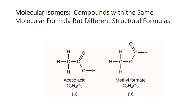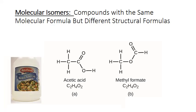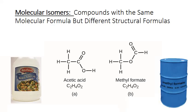It's a subtle difference, but it can have a big impact on the properties of the substances. For example, acetic acid is the active ingredient in vinegar. Methyl formate, on the other hand, is an industrial chemical used in the manufacture of styrofoam and as an insecticide.